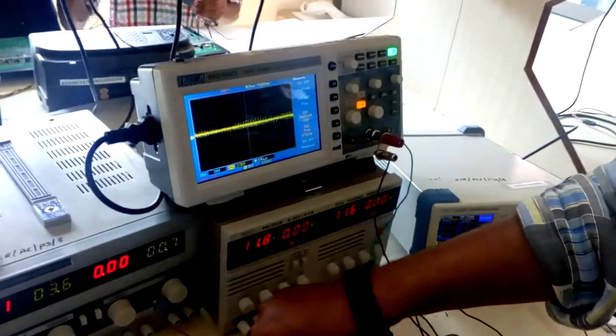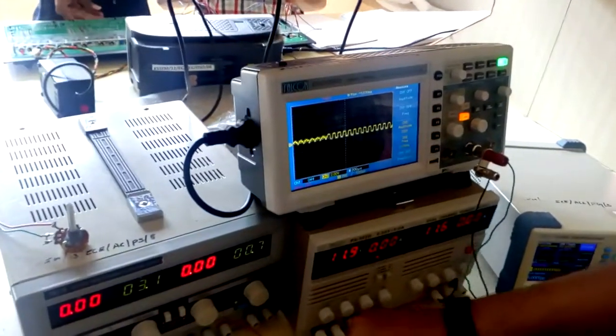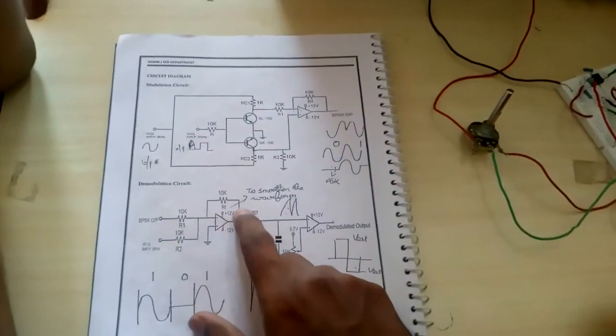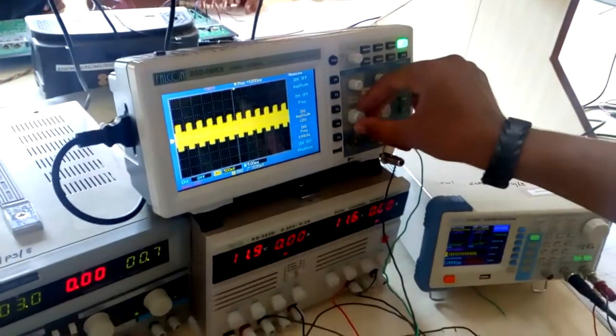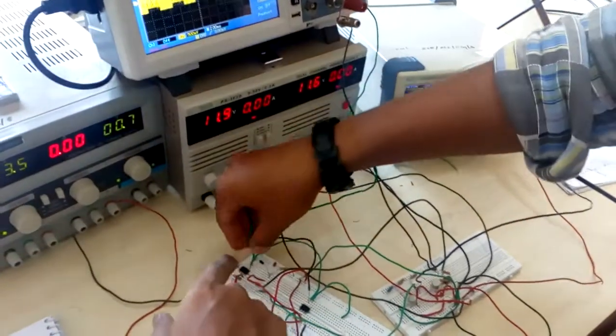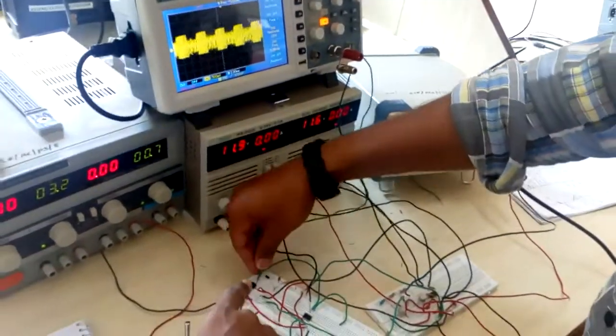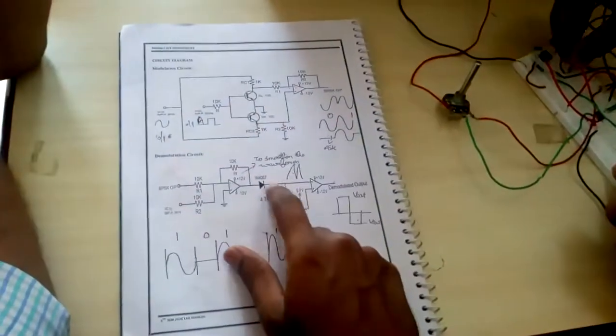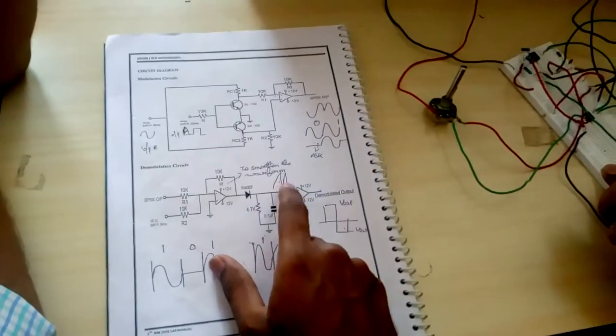Now we will check the output at the first op-amp. The ASK output looks somewhat like this. It's connected there. Now we will check the output of the envelope detector, and you get some spikes like this.